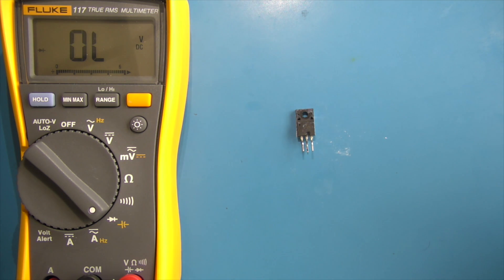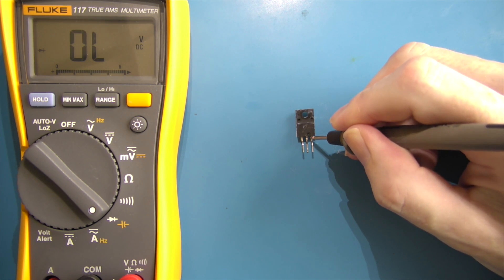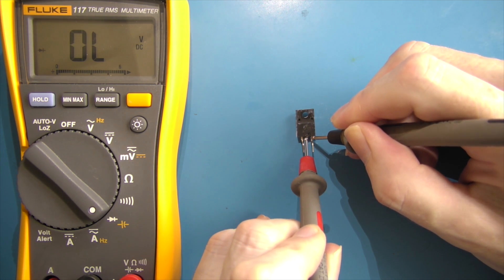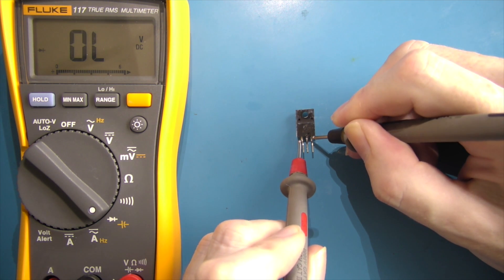I'm then going to place my positive lead on the collector. This IGBT is not conducting. I am now going to briefly touch the gate, then come back and touch the collector. I can see this IGBT has now turned on.